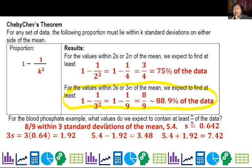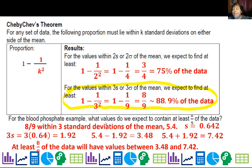Above the mean 5.4 plus 1.92 gives me 7.32. So if I want to get a big capture even more of the data and I want to make sure I get at least 88.9% of it, those will be between the values of 3.48 and 7.32.